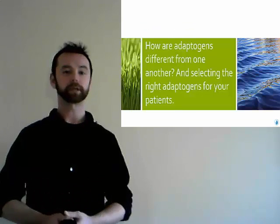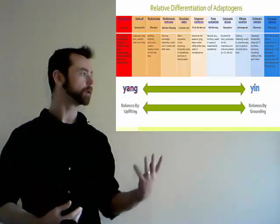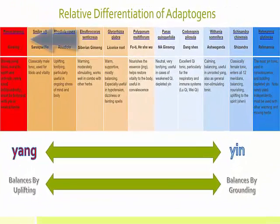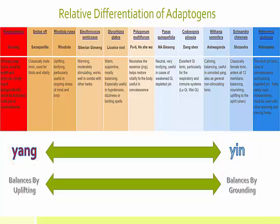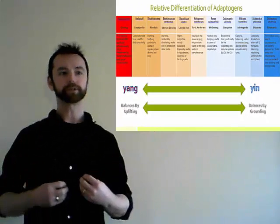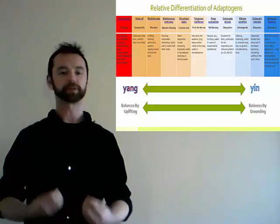Let's get right into it. Let's talk about the relative differentiation of adaptogens. You see in the chart here, we've got them ranging — they're even conveniently color-coded. We've got red to blue, which is going to be a little bit of our yin to our yang. We're also going to look at these from a TCM standpoint.